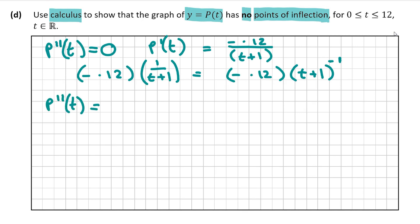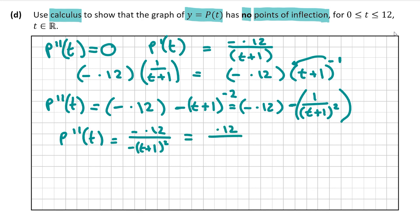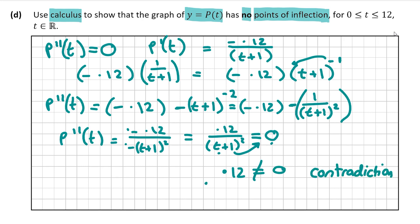Finding the second derivative: bring the minus 1 power down, giving P''(T) = minus 0.12 multiplied by minus 1 over (T + 1)^2 = 0.12 over (T + 1)^2, since the two negatives cancel. Setting P''(T) = 0 and multiplying through gives 0.12 = 0, which is a contradiction. Therefore there are no points of inflection, which is what we needed to show.